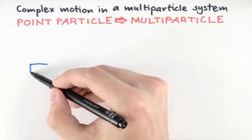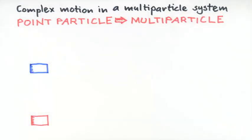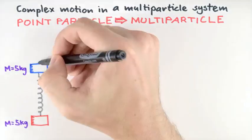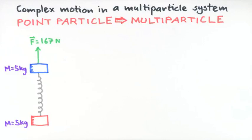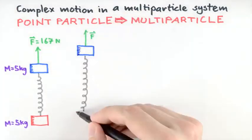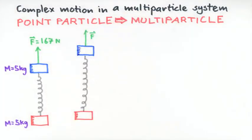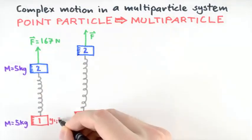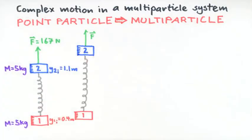Here's the problem statement. Two blocks, each of mass 5 kg, are connected by a spring of negligible mass and held up vertically, one block over the other as shown. Starting from rest, an upward force of constant magnitude 167 N is applied to the top block. Sometime later, the blocks have moved upward. Labeling the bottom block as block 1 and the top block as block 2, the initial and final heights of the two blocks are given as shown.